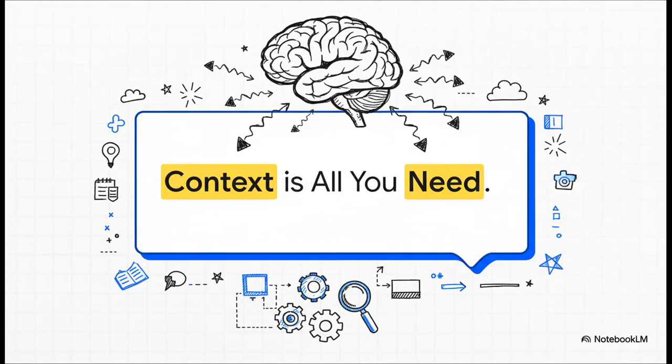This highlights one of the most important ideas in modern AI: context is all you need. This is the key to getting great results. For example, instead of just asking 'write about dogs,' which is super vague, you'd give it context. You'd say, 'You are a veterinarian — now write a blog post for new puppy owners about the three most important things to do in their first week.' See the difference? That extra detail is absolutely everything. It really is all about the setup.